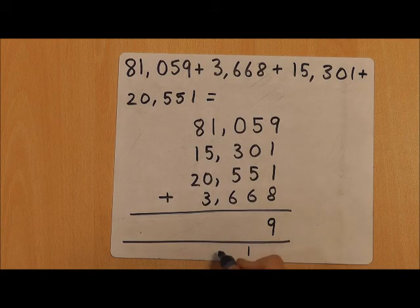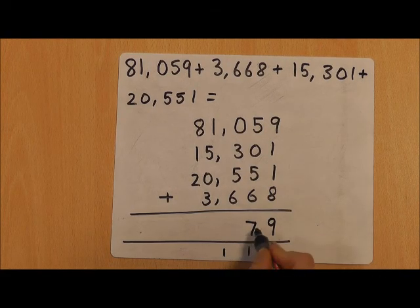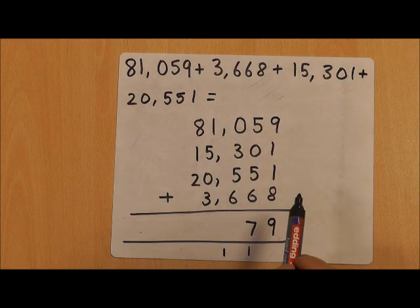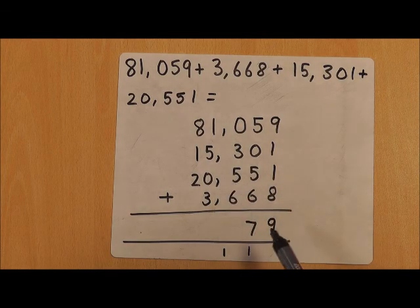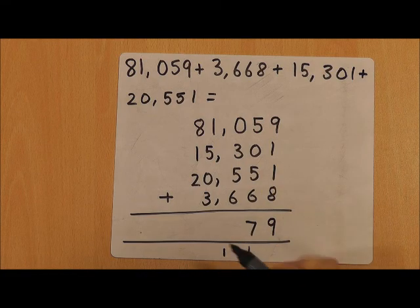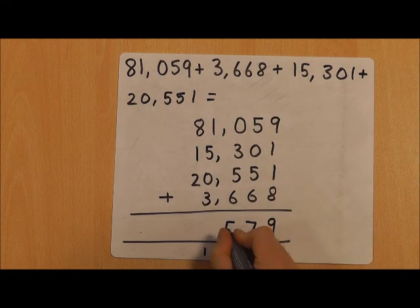0 add 3 is 3, add 5 is 8, add 6 is 14, and add that 1 is 15, so again I've carried that 1 over. I'm going to put a comma there to show that I'm now adding up the thousands.